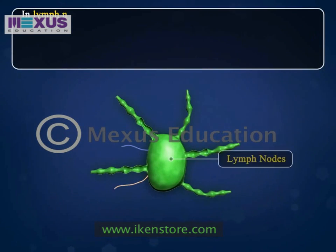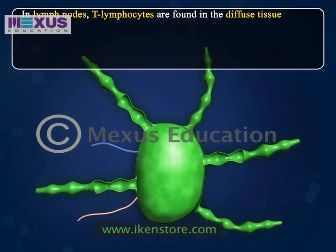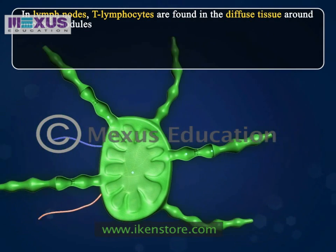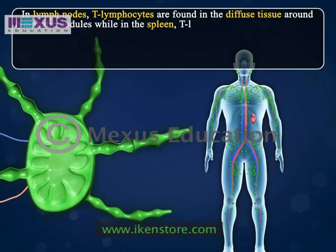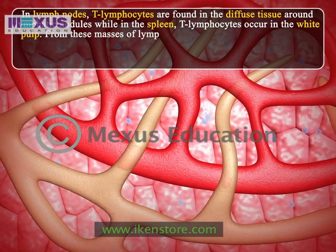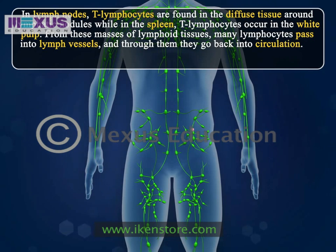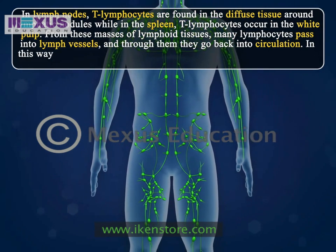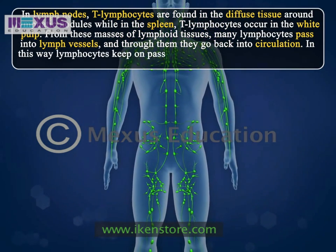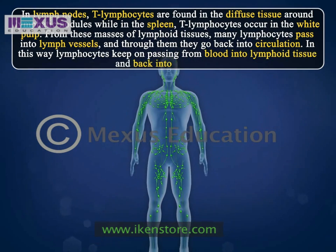In lymph nodes, T lymphocytes are found in the diffuse tissue around lymphatic nodules, while in the spleen, T lymphocytes occur in white pulp. From these masses of lymphoid tissues, many lymphocytes pass into lymph vessels and through them go back into circulation. In this way, lymphocytes keep on passing from the blood into the lymphoid tissue and back into the blood.